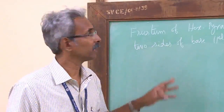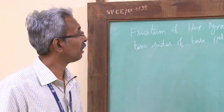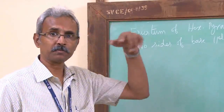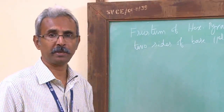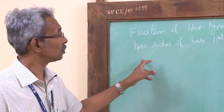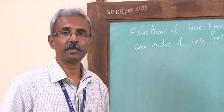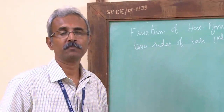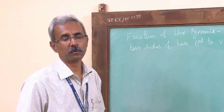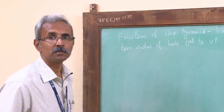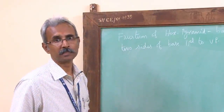We start with this problem: a frustum of a hexagonal pyramid with base side 20 mm and top side 8 mm, resting on the HP on its base such that two of its base sides are parallel to the VP, and the height of the frustum is 55 mm. We will draw the isometric view of this pyramid, starting with the top view of the hexagon.